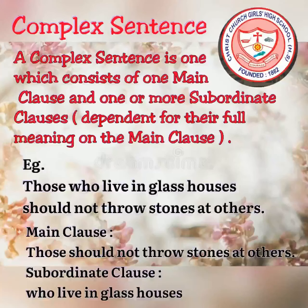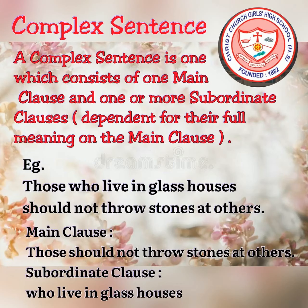Next we have complex sentence. A complex sentence is a sentence that contains one independent and at least one dependent clause. An independent clause is a phrase that would make sense if it were a sentence on its own, whereas a dependent clause will not form a sentence on its own. When these two types of clauses appear in a sentence, we create a complex sentence.